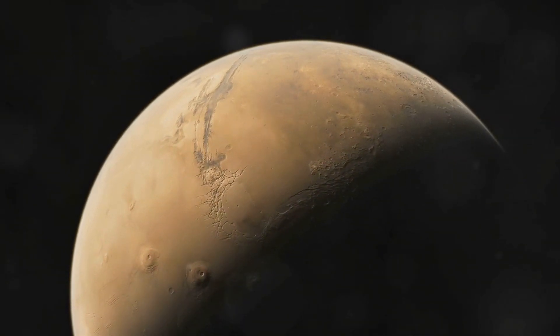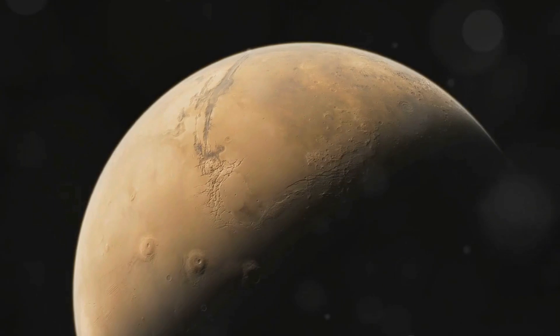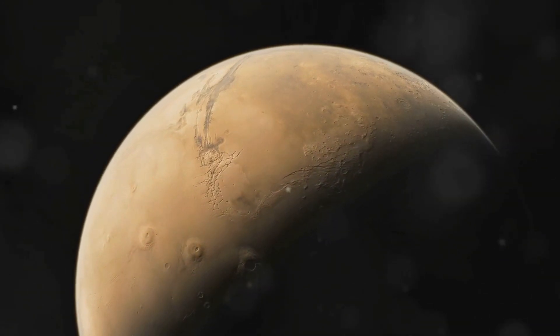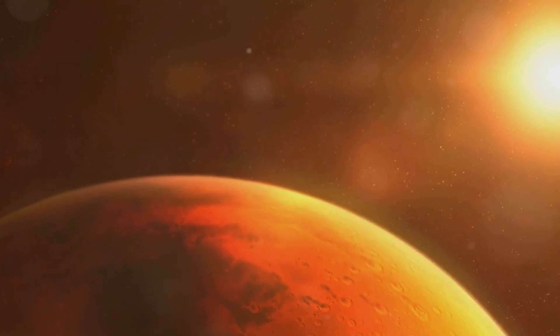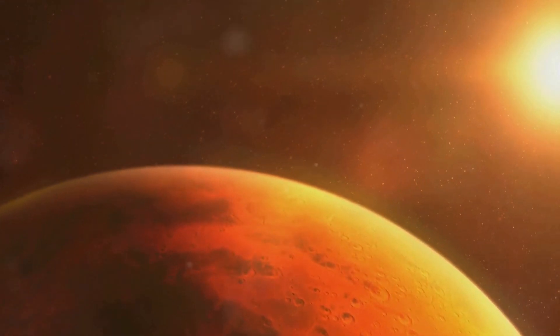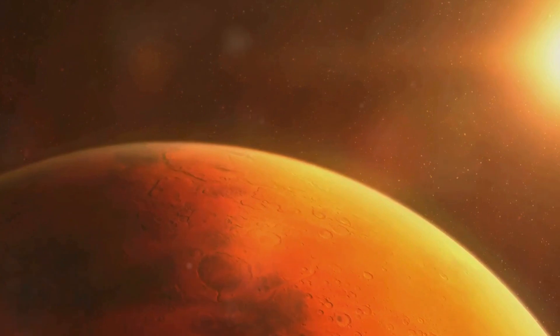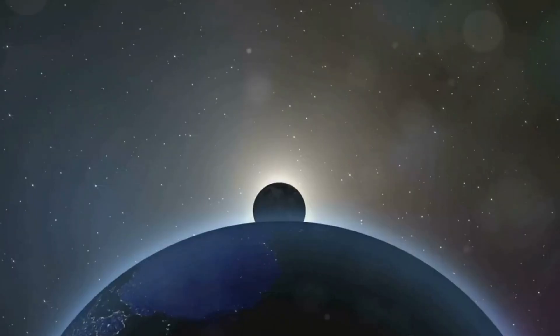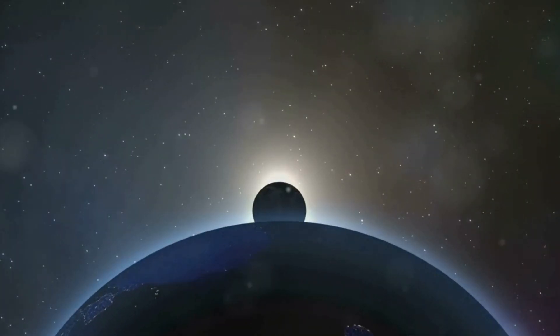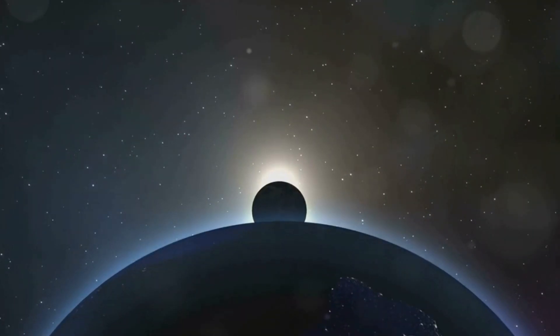But on Mars, these events happen almost every other day. This is due to the smaller orbits and faster speeds of Phobos and Deimos. However, these frequent Martian eclipses are not as dramatic as Earth's solar eclipses. Due to the small size of the moons, they don't block out the entire sun, and hence the environment doesn't darken significantly during the eclipse.